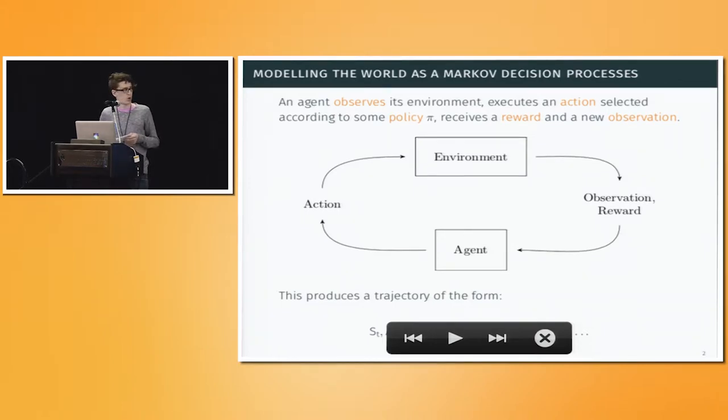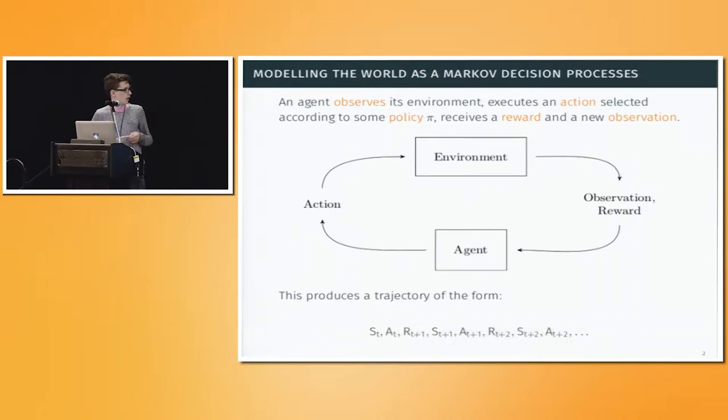In reinforcement learning, we model the world as an agent interacting with an environment. The agent gets an observation, it selects an action according to a policy, executes that action, and the environment responds by giving it a reward and a new observation. The cycle repeats, and then you get a trajectory of the form state, action, reward, state, action, reward, and so on.